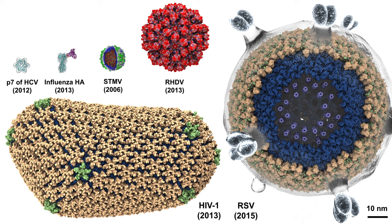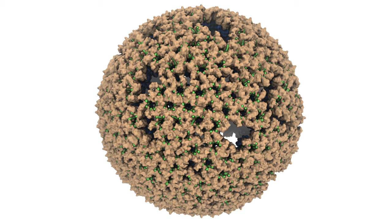They range from small viral components like the P10 peptide in hepatitis C and hemagglutinin in influenza A virus, to entire virus capsids like STMV, rabbit hemorrhagic disease virus, HIV, and most recently the immature form of Rous sarcoma virus. Click on the molecules or the links in the description below if you would like to know more about these viruses.